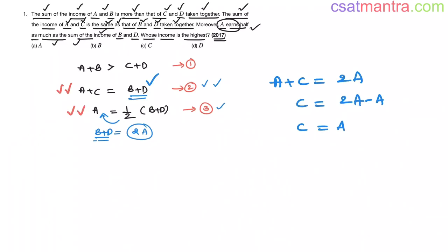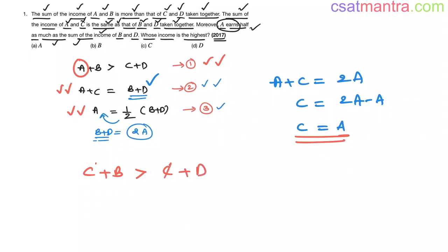We've made use of Equations 2 and 3 and got the result: A = C. Now let's put this result into Equation 1. Substituting A as C: C + B > C + D. The C's cancel out, giving us B > D.